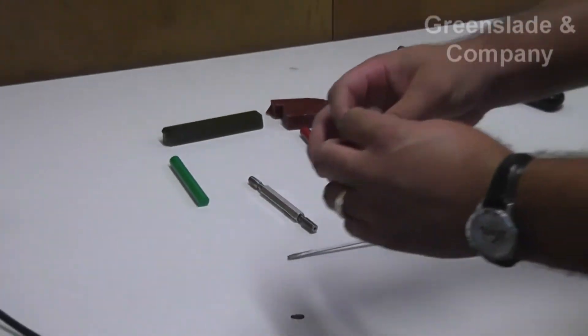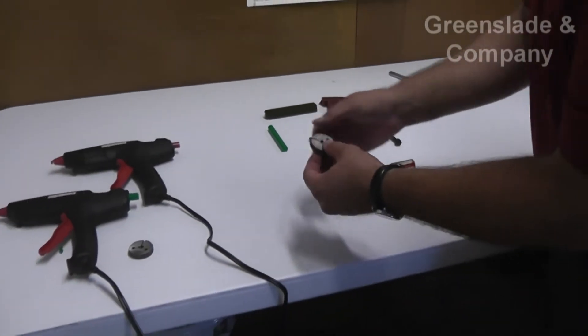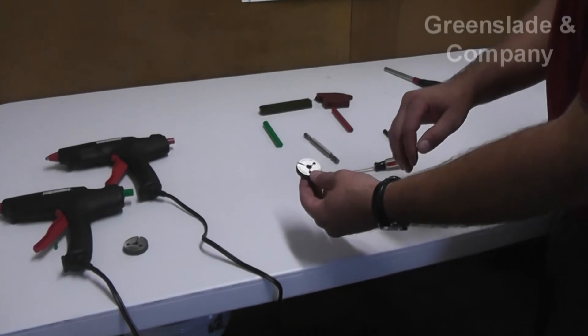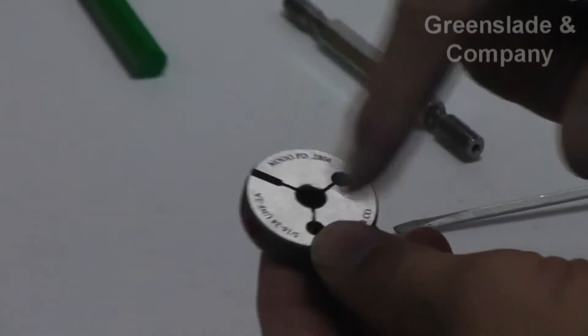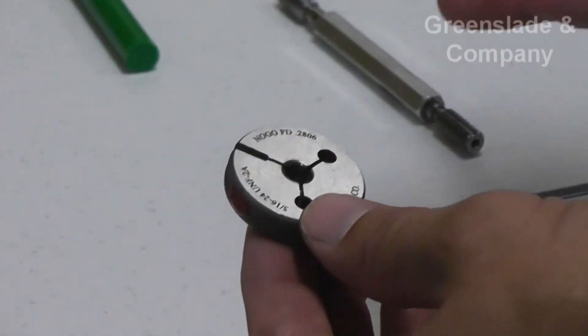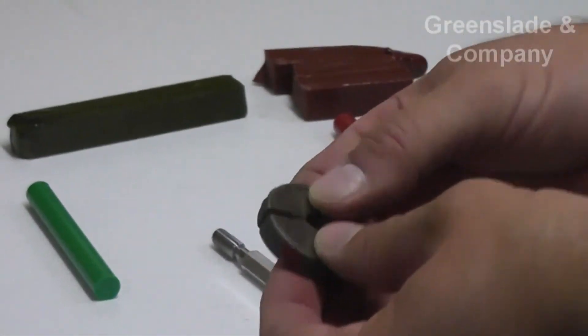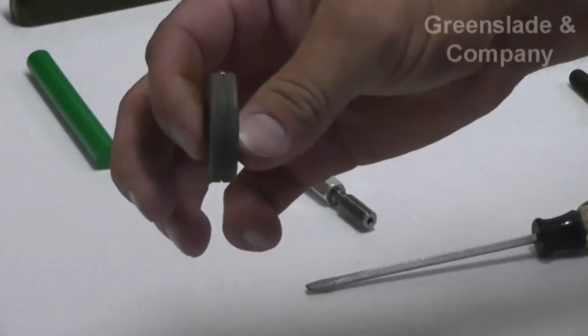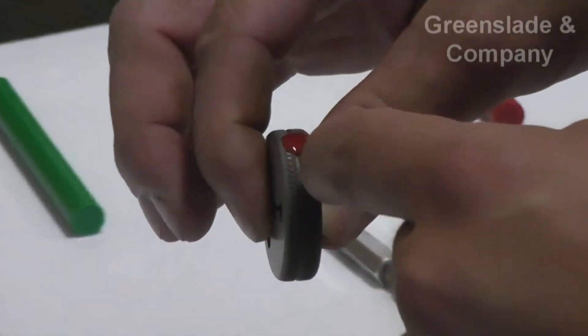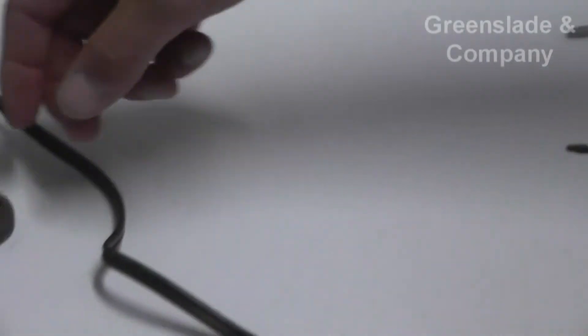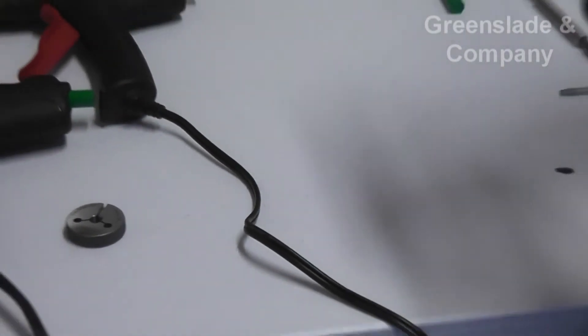Now one cool thing that you might or might not know about ring gauges is that a lot of times, after years of use and abuse out there in the shop, your markings tend to come off. You don't quite see the size so well, or you can't tell if it's a go or a no-go. But you can always tell a no-go because it always has this groove around the circumference. That's a quick and easy way. You got two ring gauges and they're both the same size—your no-go is always the one with the groove.